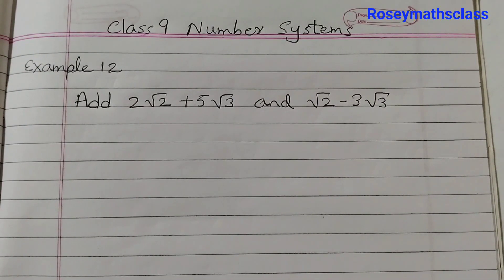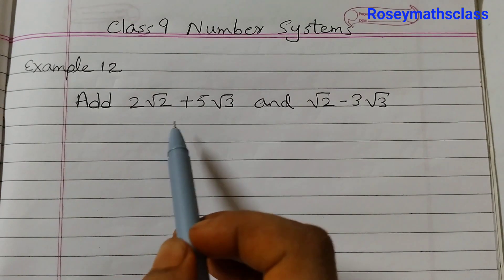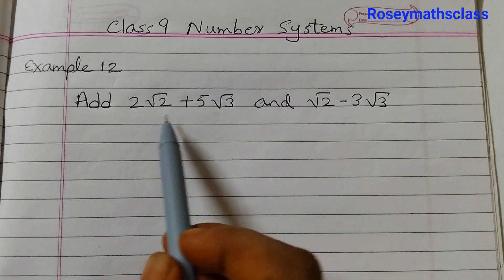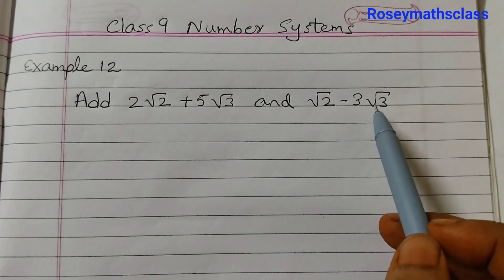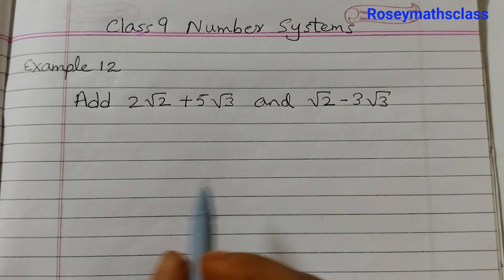Hello students, in today's video we shall learn how to add irrational numbers. These are all irrational numbers: 2√2, 5√3, √2 minus 3√3. So we are going to add all these numbers.